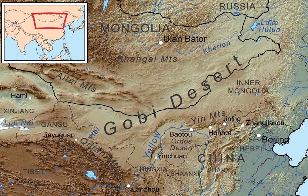Archaeologists and paleontologists have done excavations in the Nemekt basin in the northwestern part of the Gobi Desert in Mongolia, which is noted for its fossil treasures, including early mammals, dinosaur eggs, and prehistoric stone implements, some 100,000 years old.